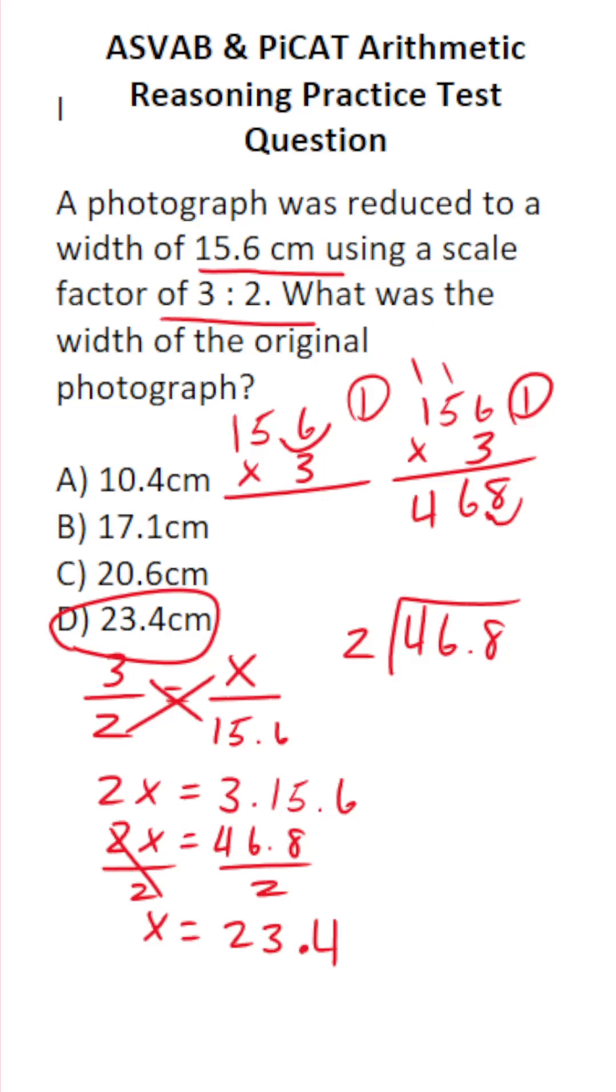You could also do the long division, but you're going to get the same result. Two goes into four two times. Two goes into six three times. Bring our decimal up. Two times four is eight. So this would give you no remainder. So this one is D.